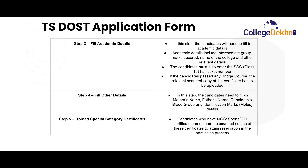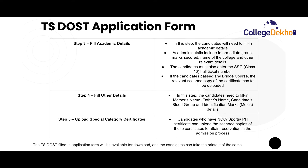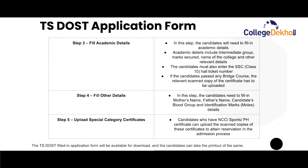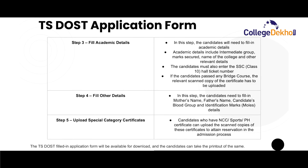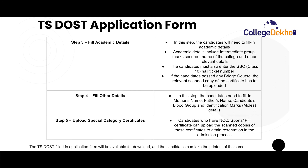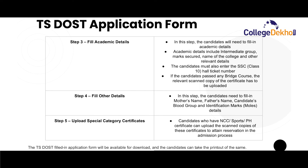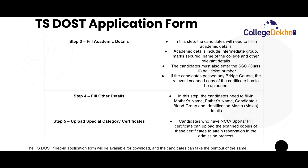The next step is to fill other details, including mother's name, father's name, candidate's blood group and identifying marks such as any mole detail on the body. The next step is to upload special category certificates. Candidates who have NCC, sports or PH certificates can upload scanned copies to attain reservation in the admission process. After completion of the form, the filled application form will be available for download and candidates are advised to take a printout.